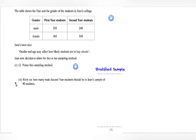The question carries on to ask, work out how many male second year students should be in Jean's sample of 40 students. So we have the sample size, 40. We have the number of second year male students, 240. And another number we need is the population size. So I have calculated this by adding up each of the values in our table. And that comes to 1200.